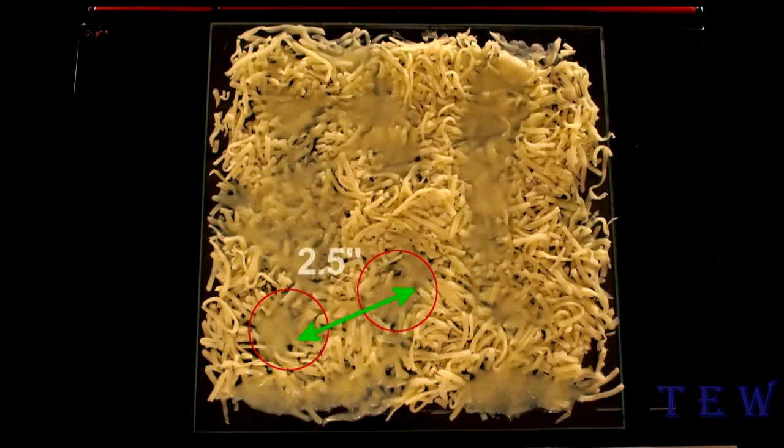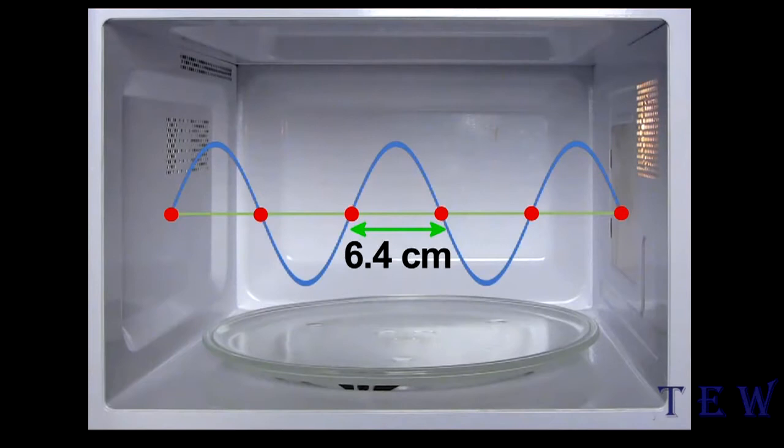If I measure the distance between melted cheese spots, I find about 2½ inches, that would be half the wavelength, the distance between nodes, and is pretty close to the actual wavelength of microwave radiation used.